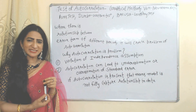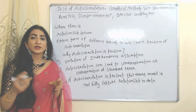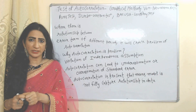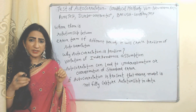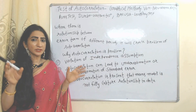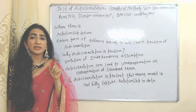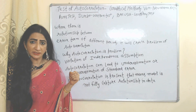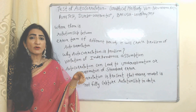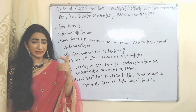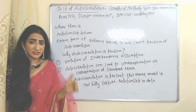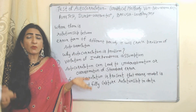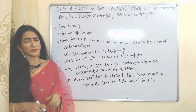Hello everyone, my name is Mini Ceti. I hope you all are staying healthy. Today we are going to talk about tests for autocorrelation. In a regression model, we assume error terms of different periods are not related to each other. But if error terms of different periods are related to each other — that is, when there is a relationship between error terms of different periods — it will be called autocorrelation.